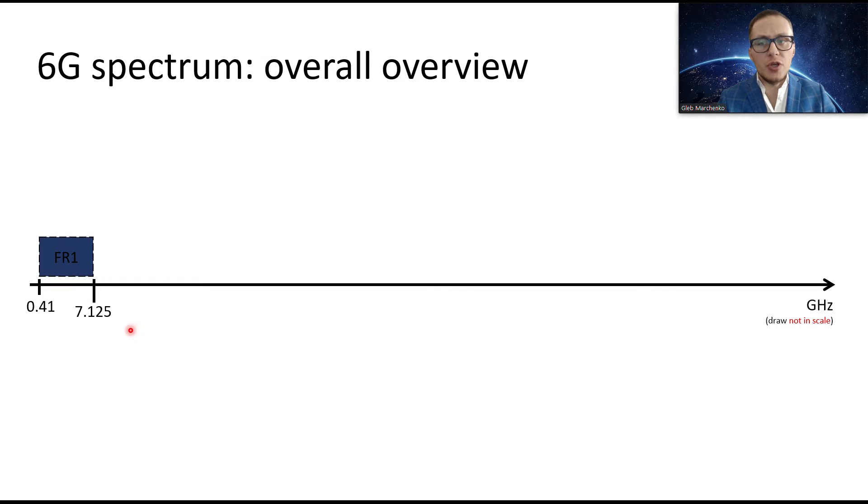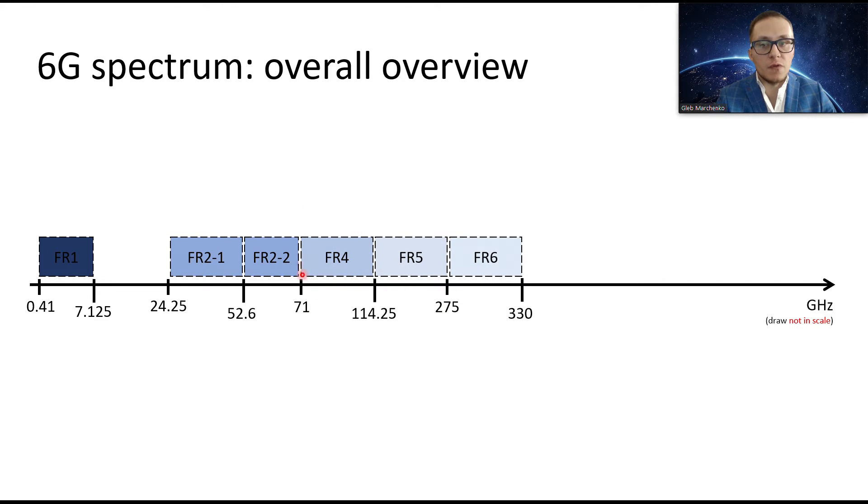6G will definitely reuse spectrum in sub 7 GHz or frequency range 1 as we may call it, and of course frequency range 2 from 24 until 71 GHz. We can also definitely say based on different articles and scientific research that new frequency bands will be available for 6G. This is from 71 GHz up until 330 GHz.